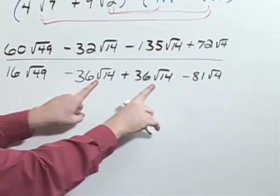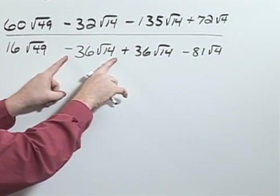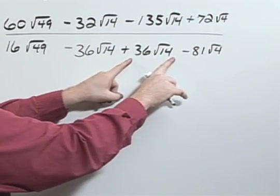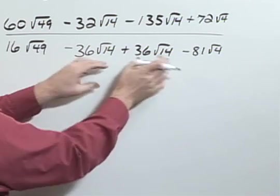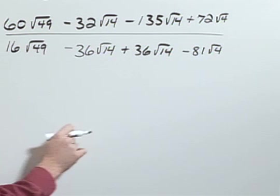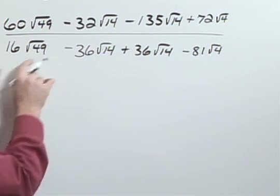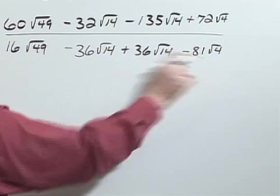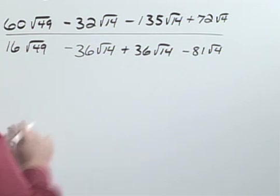Now the key part here is, notice that this minus 36 square root of 14 and the plus 36 square root of 14, those are going to drop out. My other square roots are perfect squares and so the square root of 49 is 7 and the square root of 4 is 2.